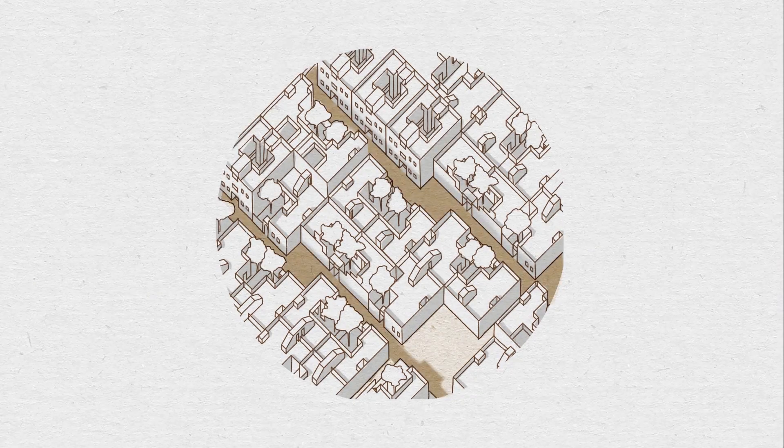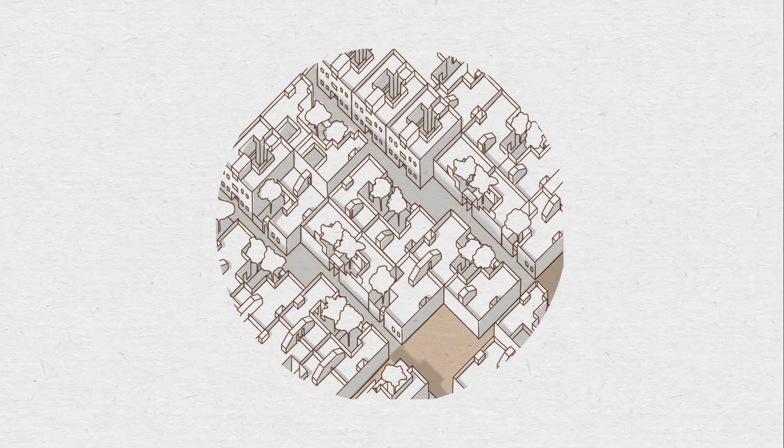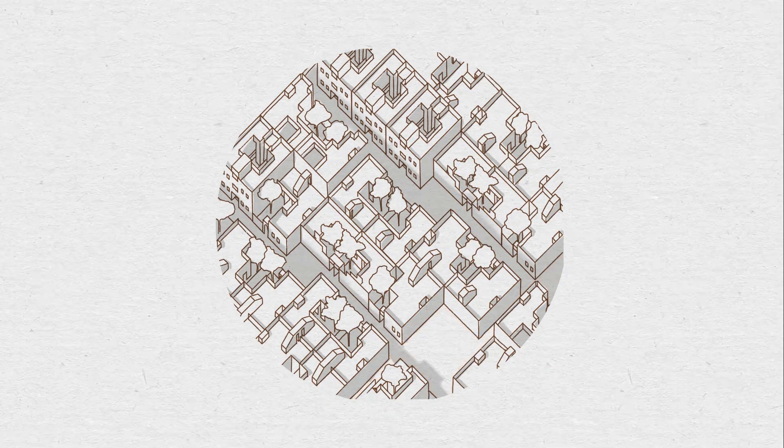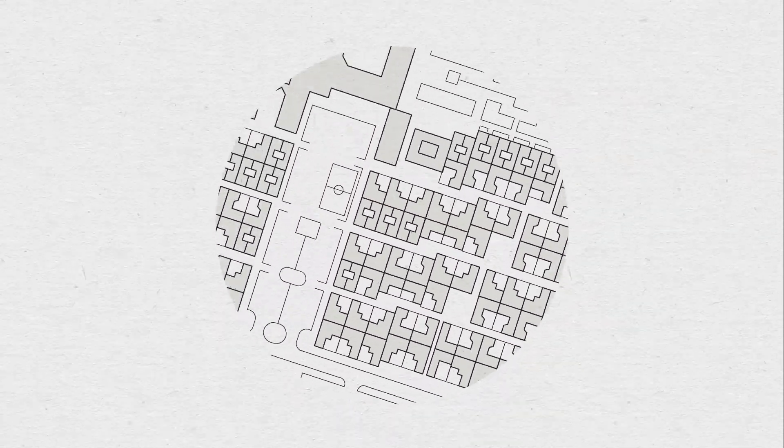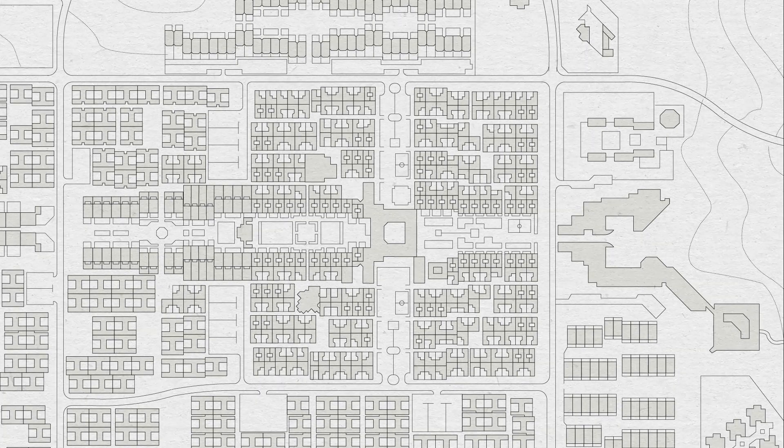From here, the narrow, treeless, brick-paved streets lead to transversal alleys which open up for small squares and playgrounds, and eventually lead to the lively, verdant spine.